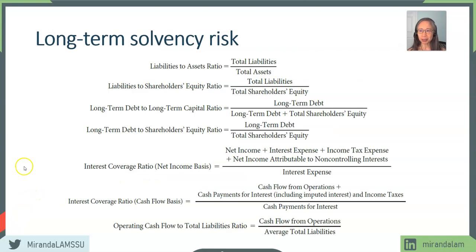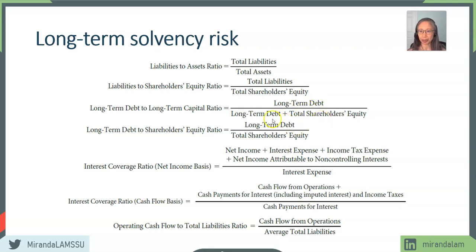For long-term solvency ratios, we're looking at overall liabilities. The two most common are the debt ratio — liability to asset ratio — or debt to equity ratio, which is the liability to shareholders' equity ratio. Another way to define that is long-term debt to long-term capital, which excludes current assets and current liabilities. So depending on the industry and the particular firm, one may be more relevant than the others. All these are balance sheet items.